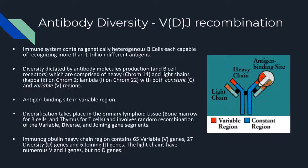Now I will get into some of the theory behind immunohistochemistry. How is IHC possible in a lab setting? One thing to consider is where we get the antibodies that we use in the IHC process. First, we'll need to talk about antibody diversity. The immune system contains genetically heterogeneous B cells, which are each capable of recognizing more than a trillion different antigens. This diversity is usually dictated by the production of these antibody molecules. Each antibody is comprised of heavy and light chains. The genes that code for these heavy chain regions are found on chromosome 14, while kappa and lambda light chain genes are found on chromosomes 2 and 22, respectively.